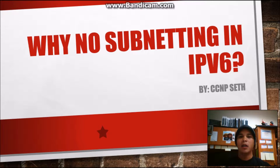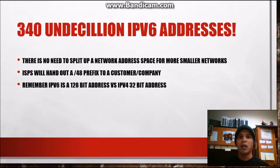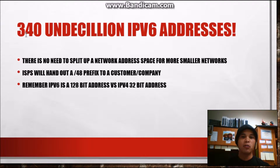I'll explain how IP addresses are going to be handed out by Internet Service Providers. In IPv6, there are 340 undecillion IP addresses available, compared to 4.3 billion IPv4 addresses. Undecillion — that's like 10 to the 38th or 39th power, that's how many zeros are behind 340. So there is no need to split up a network address like a Class A or Class B in IPv4 to break them into smaller networks.